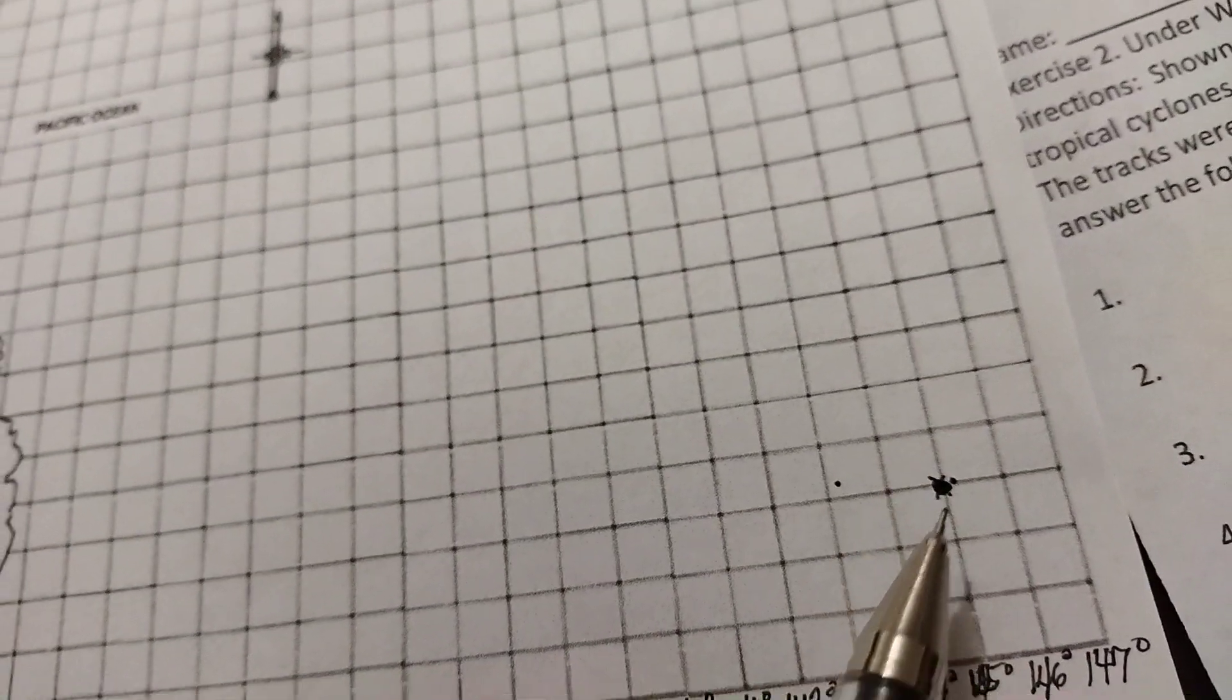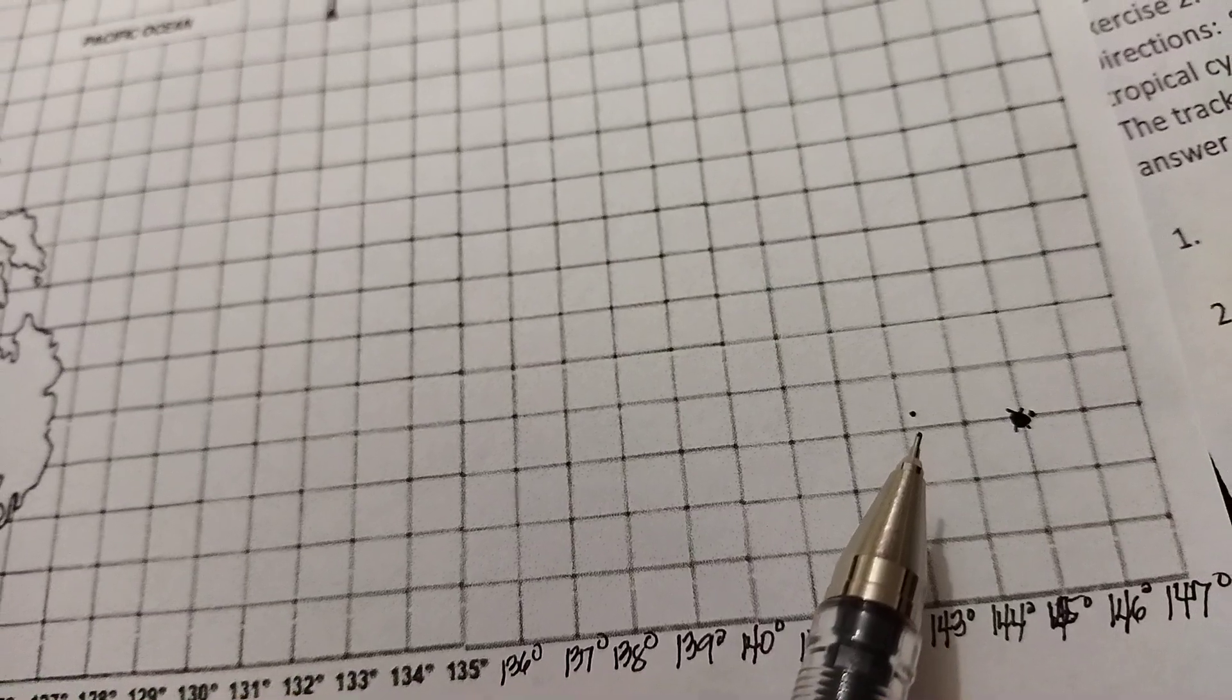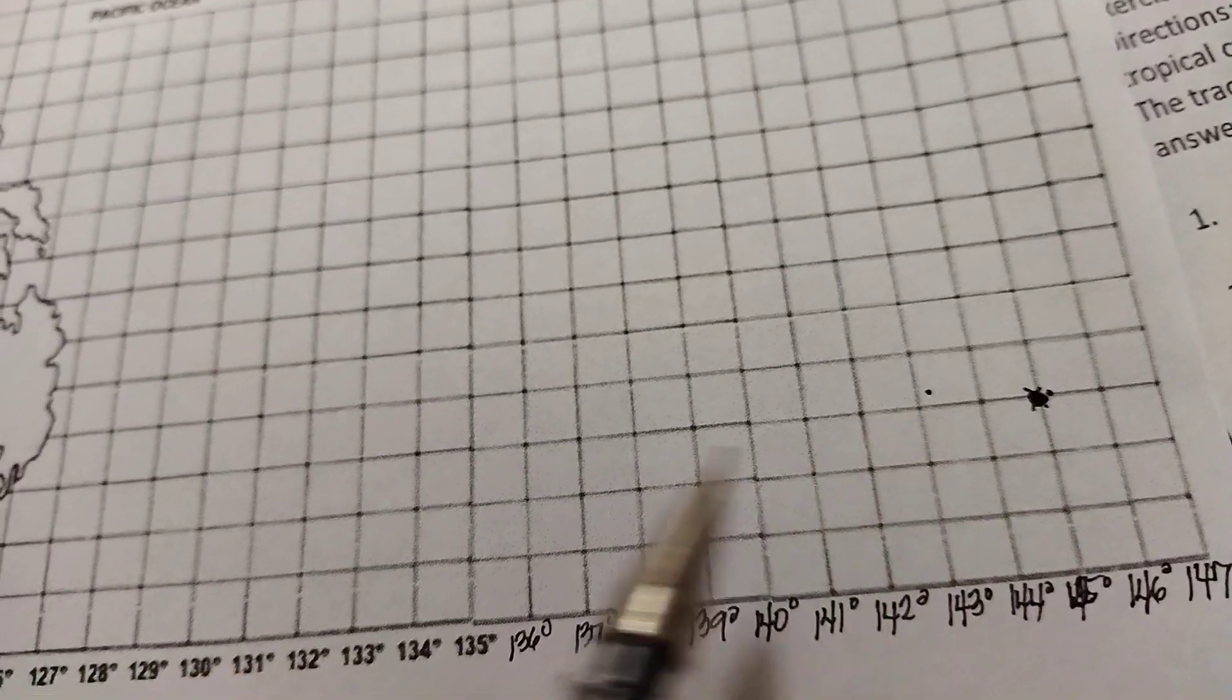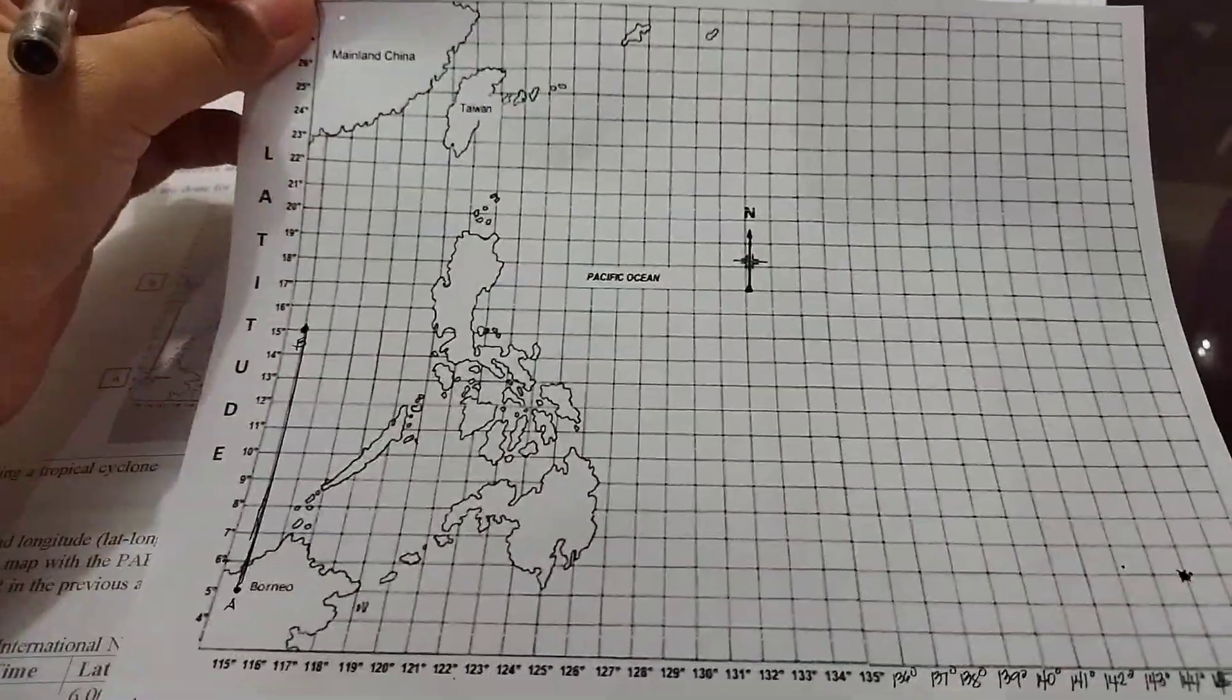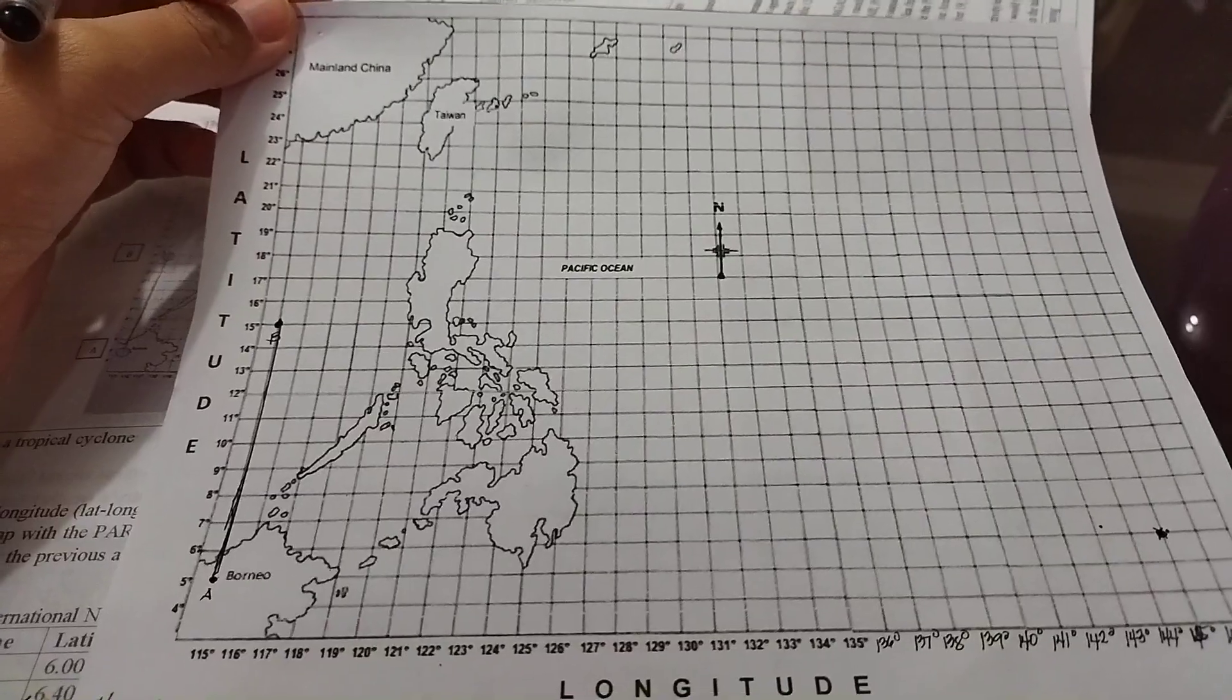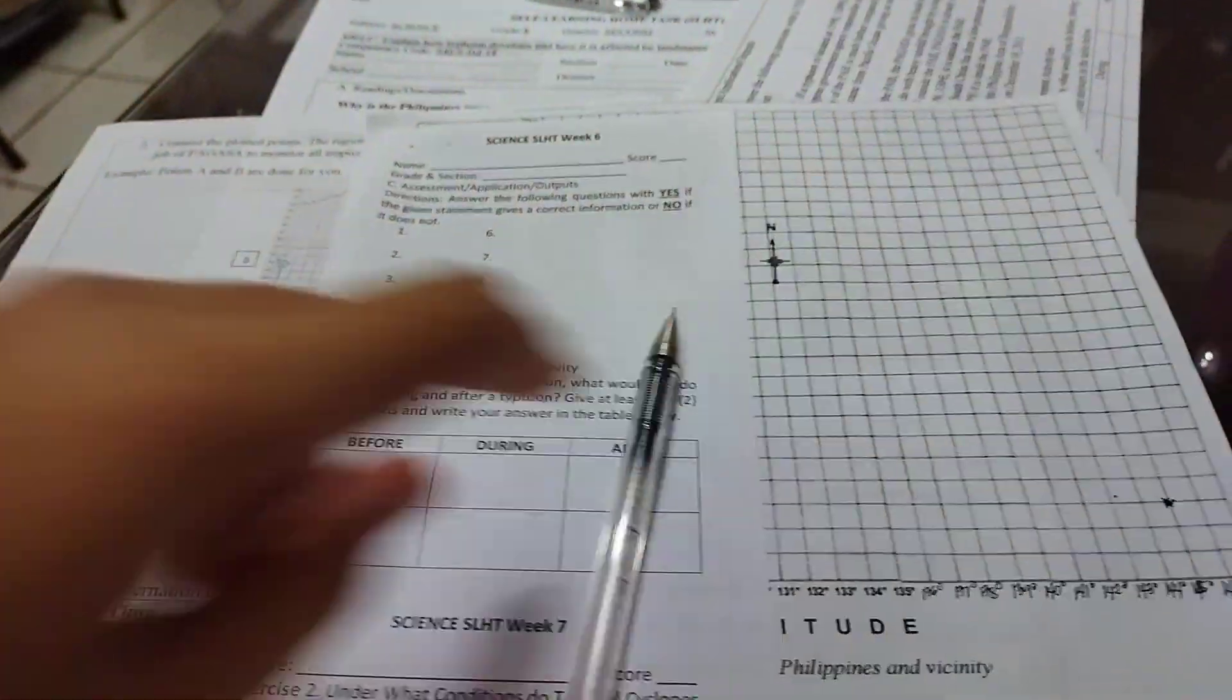Continue from point A and point B. It's your turn to make point C up to point Z. Just small points, and don't put letters, just points. This is your performance for SLHT number 6. Make sure you will be able to submit this together with your answer sheet. Thank you.